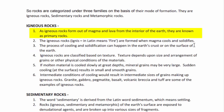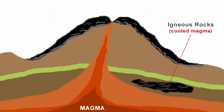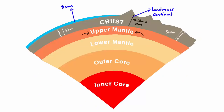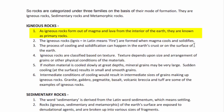The first one is igneous rock. Igneous rocks are formed out of magma and lava from the interior of the earth. Magma is also called molten rock, and it is found in the mantle of the earth. When magma comes out of the surface, it cools down and becomes solid — that's how igneous rocks are born. Igneous rock is also known as primary rock, because it is formed from magma — the core ingredient of the earth. The word igneous is derived from the Latin word ignis, which means fire.